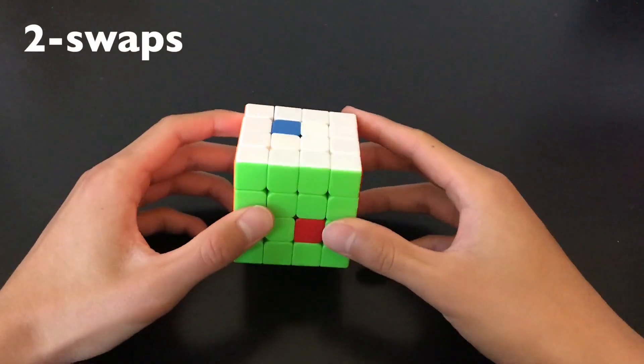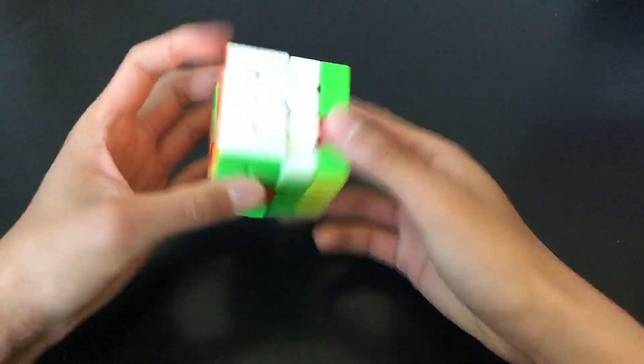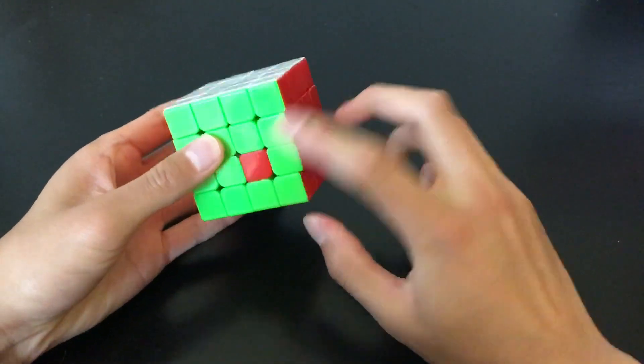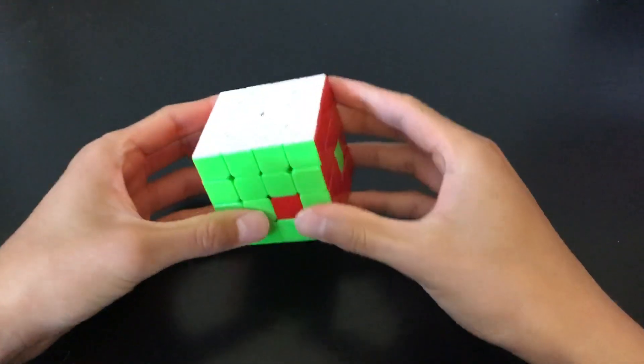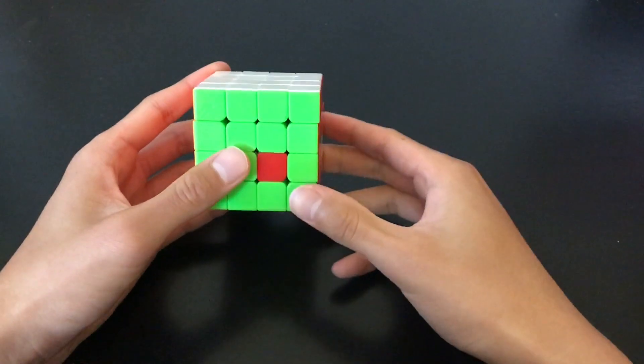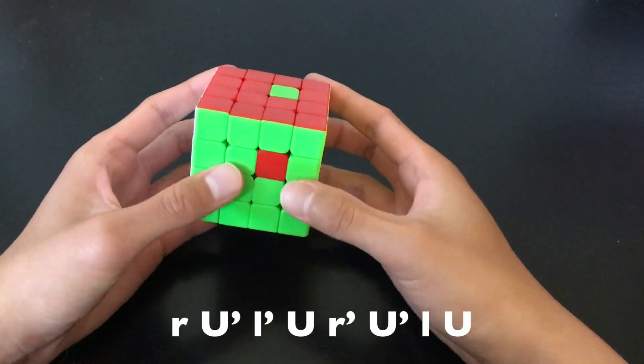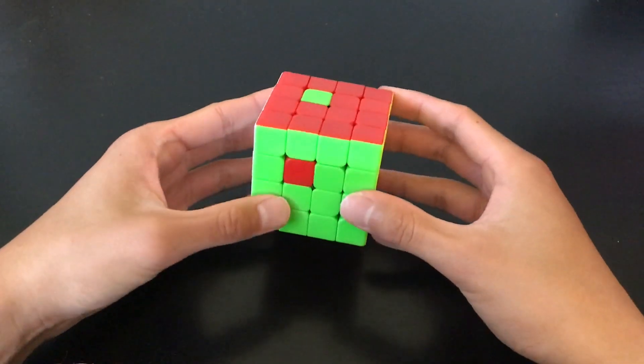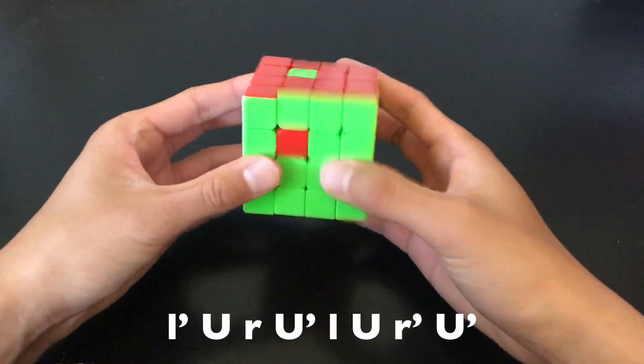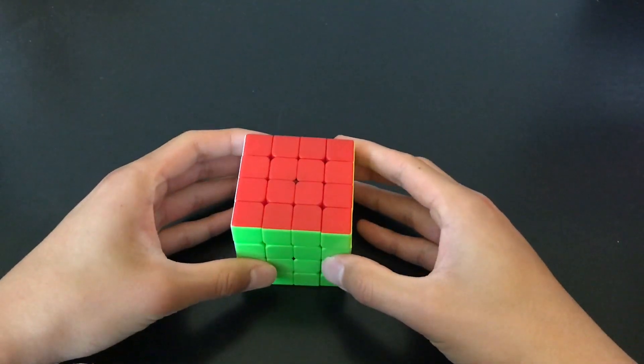Sometimes you'll end up with a case like this, where after you solve most of the centers, you'll end up with two swap centers and everything else solved. Now, you could break into a new cycle and solve them, or you could do one fast alg and just swap these two centers. It's also helpful to learn the lefty mirror. Both of these algs will be in the description.